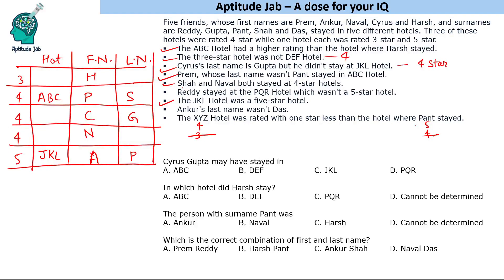Therefore, Punth must have stayed in the five-star hotel, making Ankur Punth the guest at JKL. XYZ is then a four-star hotel, and DEF is also a four-star hotel. The remaining hotel, PQR, must be the three-star hotel. Since Reddy stayed at PQR, Reddy is placed in the three-star row. Ankur's last name is not Das, so the remaining surname Das is filled in accordingly.